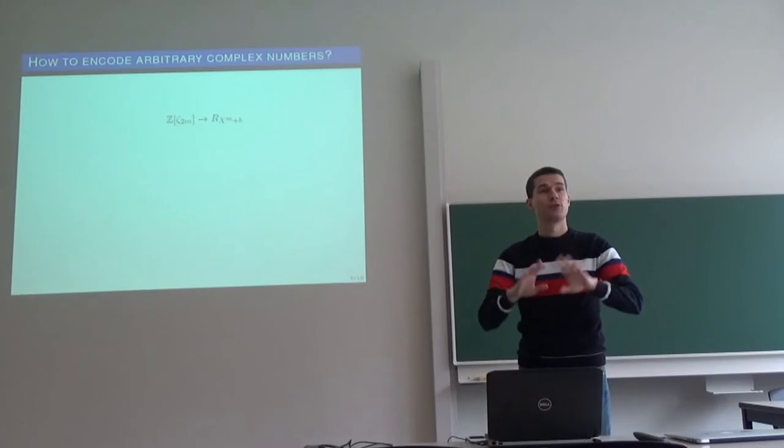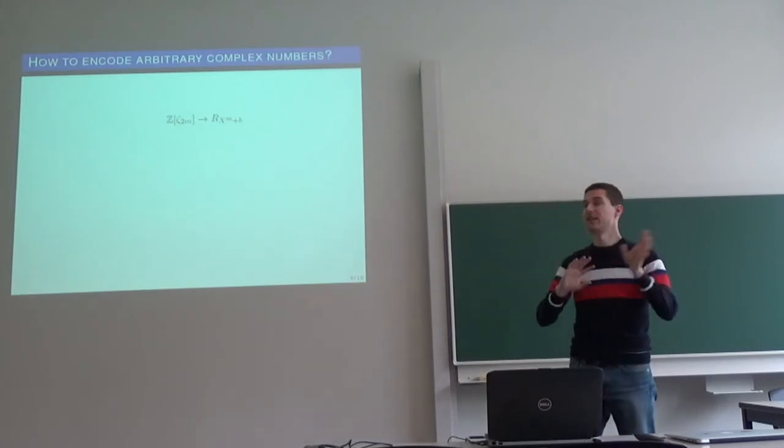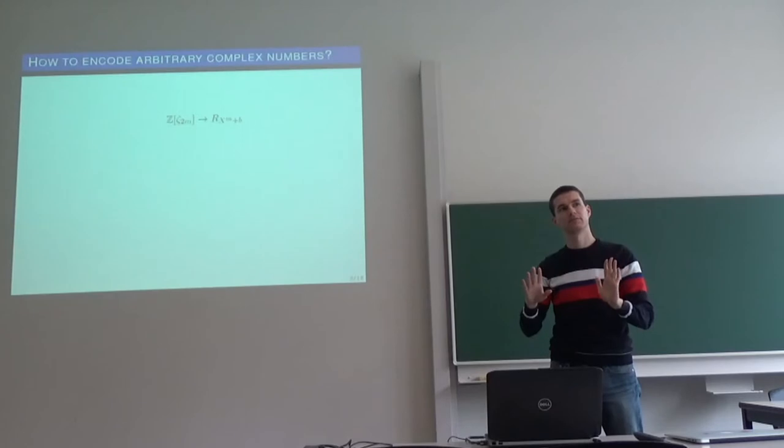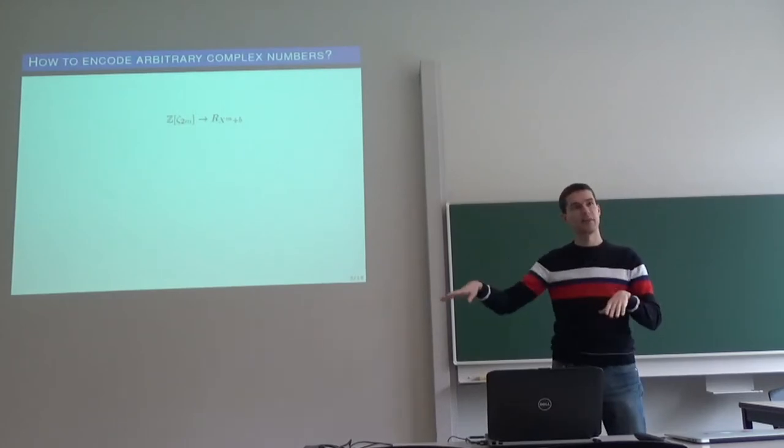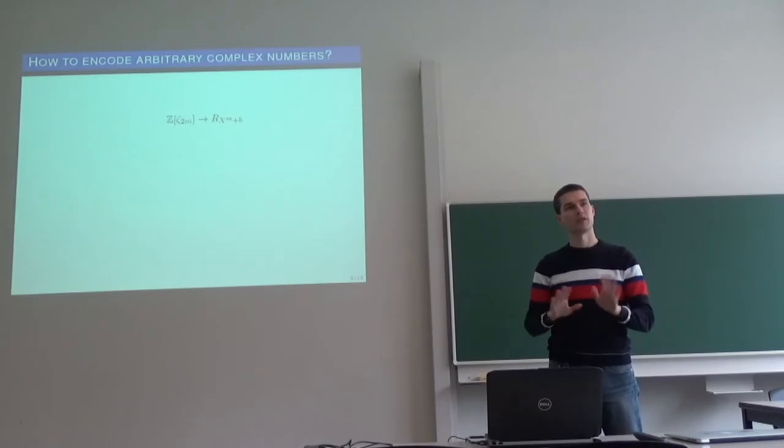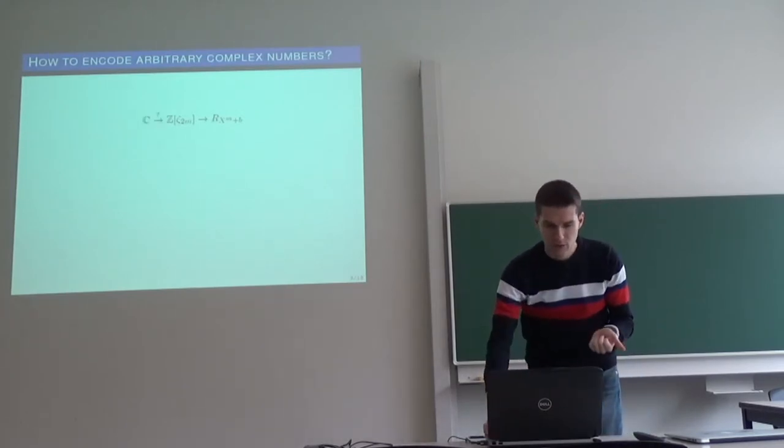So now we have this super technical encoding from cyclotomic integers to the plaintext base, but the ultimate goal is to encode complex numbers, just to return complex numbers. So how to do that?